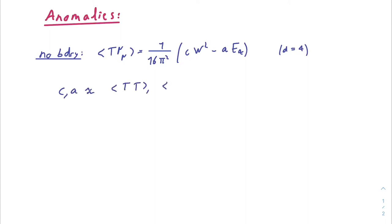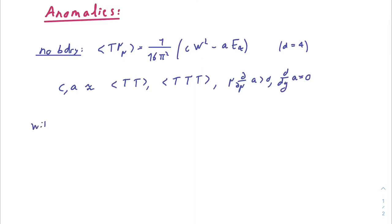C and A are related to the two-point and three-point function coefficient of a stress tensor, and they've got interesting properties among which they flow monotonously for A, and A does not depend on marginal coupling.